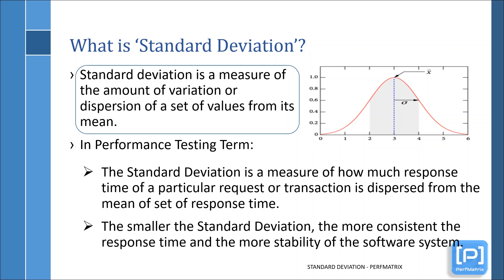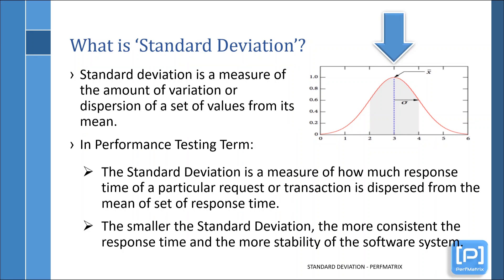If we look at the definition of standard deviation, it states that standard deviation is a measure of the amount of variation or dispersion of a set of values from its mean. You can see the given figure. A set of values are plotted on this graph and the middle dotted line denotes the mean. The sigma sign represents the value of the deviation from its mean.